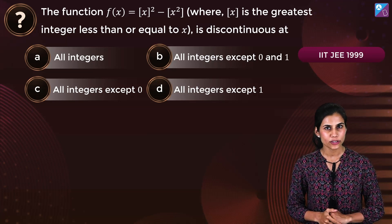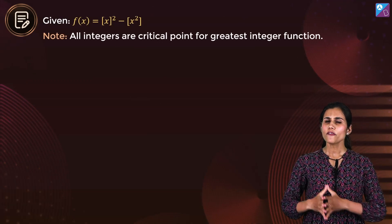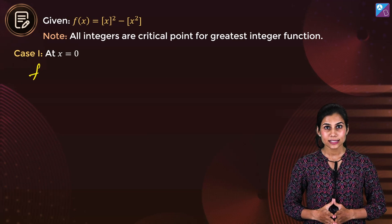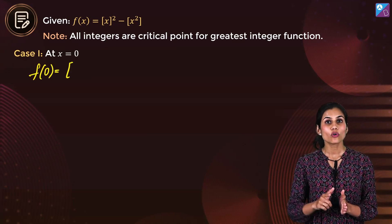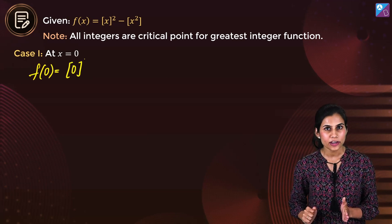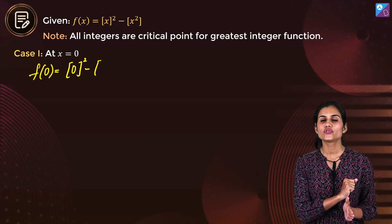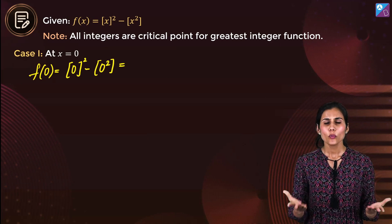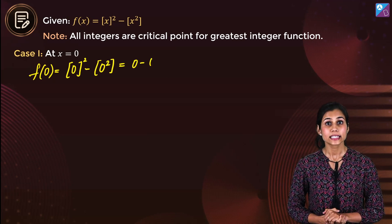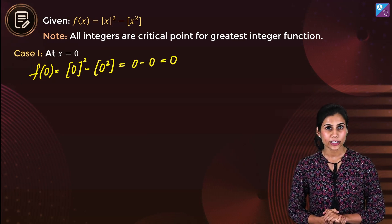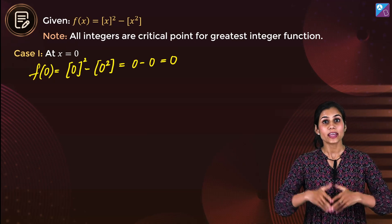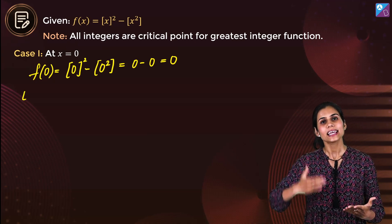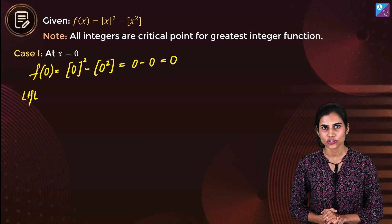Let's start with 0. What is the value of the function at 0? It is GIF of 0 whole square minus GIF of 0 squared, which is obviously 0 minus 0, that is 0 — because the greatest integer function of any integer is the same integer.